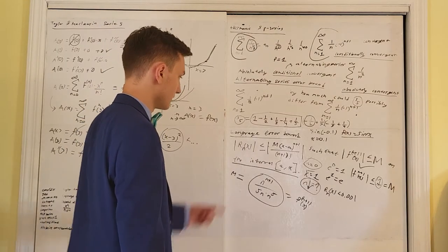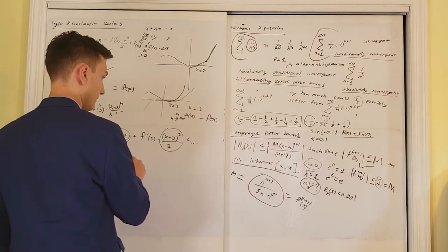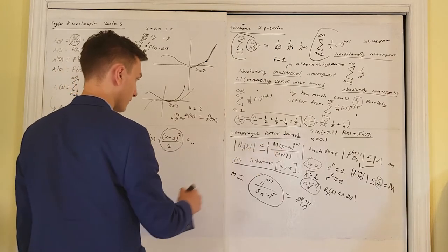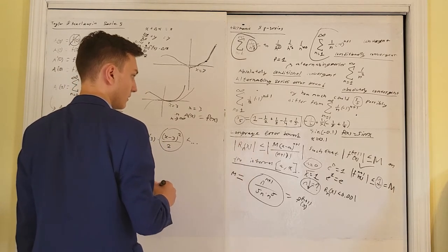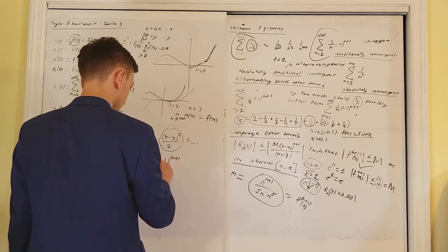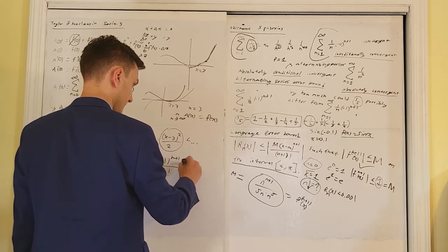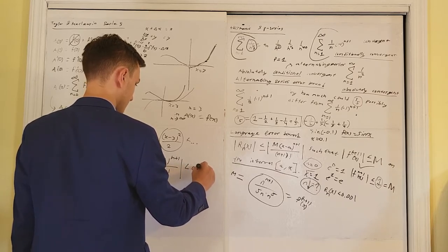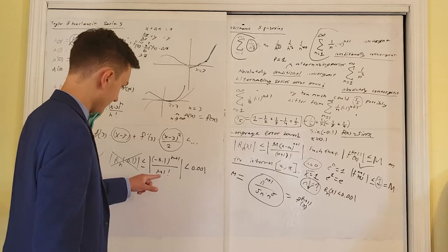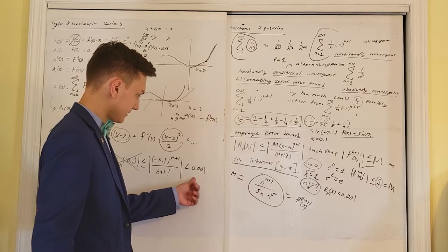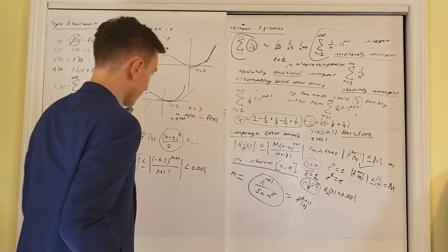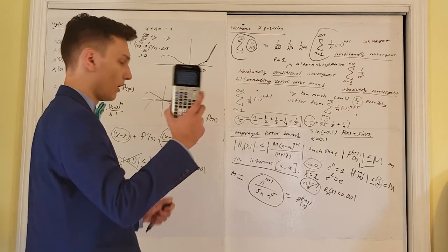Rewriting: R_n(−0.1), absolute value, is less than or equal to 1 times |−0.1 − 0|^(n+1) over (n+1)!, which must be less than 0.001. We're just looking at |−0.1|^(n+1) / (n+1)! and our 0.001. On all Lagrange error bound problems — whether multiple choice or FRQ — they will always give you a calculator. So you go to y equals and plug this in as a function, replacing n with x.